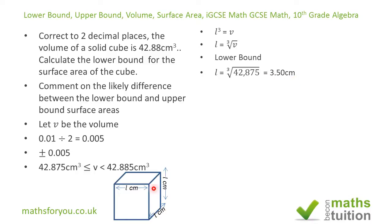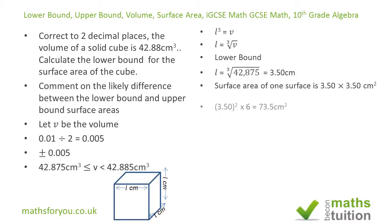The area of each surface will be 3.5 × 3.5 centimeters squared. A cube has six surfaces, so we multiply the area of one surface by six, giving us a total surface area of 73.50 centimeters squared.